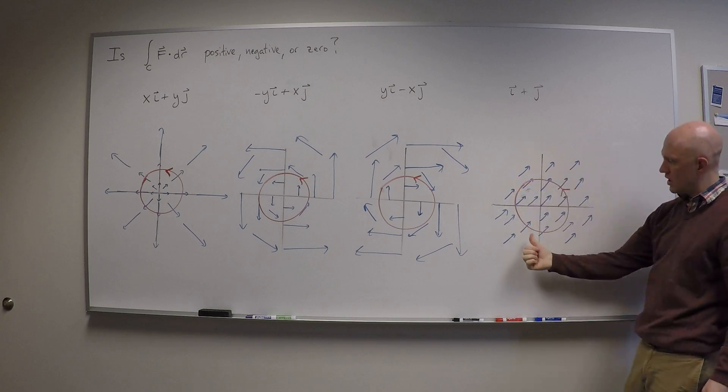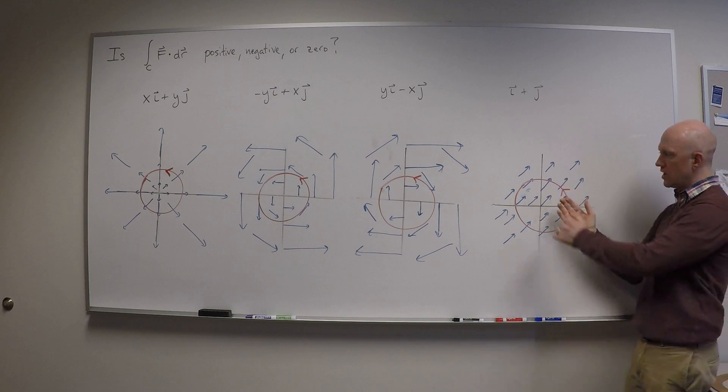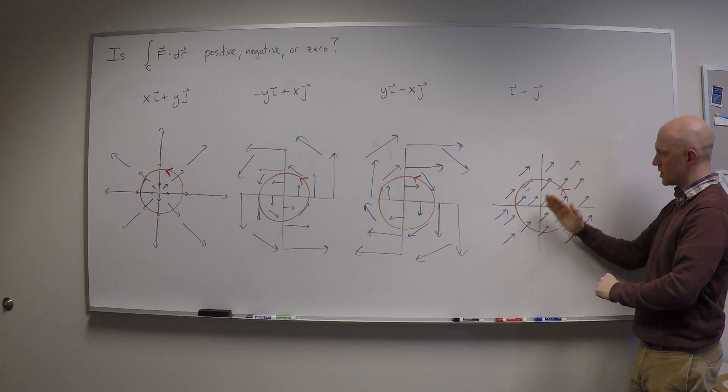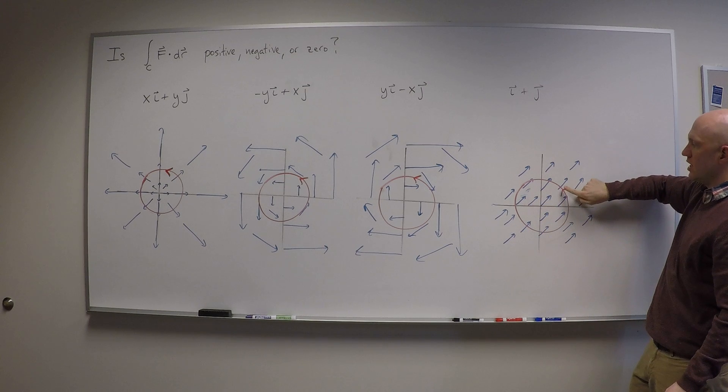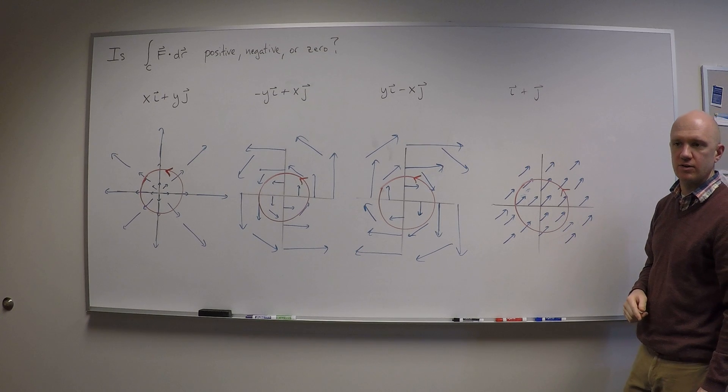Now I'm moving across it again, and now I'm going with it, so I'm getting a positive contribution. Because that negative contribution and the positive contribution are perfectly symmetric—it's just a constant vector field—I get a negative part and then a positive part, and they all add together to give me a total of zero. So this one has a zero line integral.